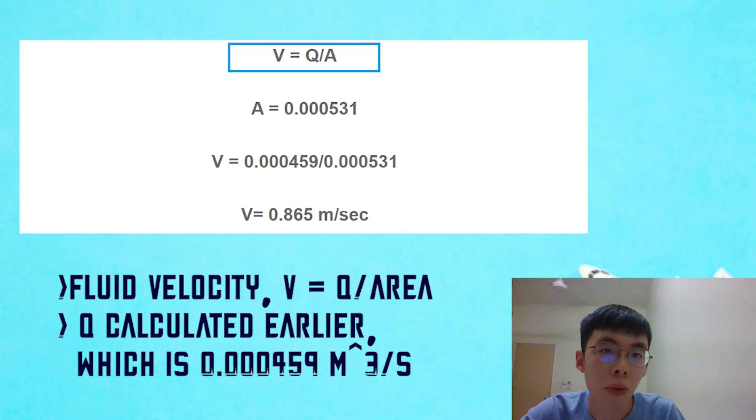From the flow rate equation, we can obtain the fluid velocity. Now if we are given an area of fluid flowing through of 0.000531 meters square, and using the previous flow rate value, a fluid velocity of 0.865 meters per second will be produced.